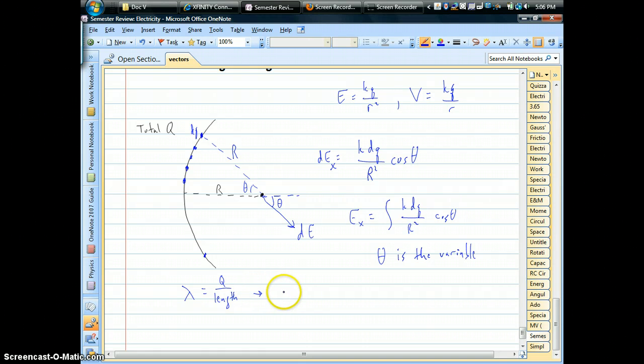then we have to try to figure out, basically, if we solve for DQ in terms of lambda, let's see, lambda times length would give you charge. So we'd have to know what the little bit of length is. DL for one of these little chunks of charge.